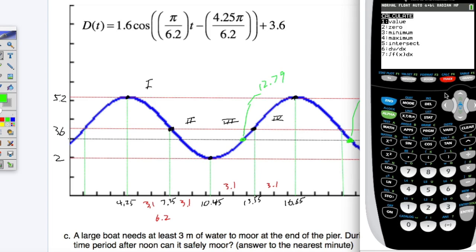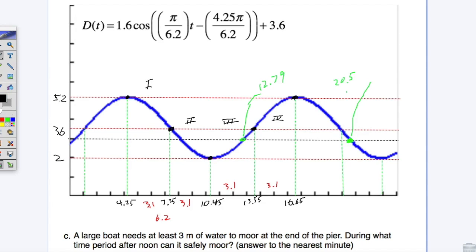And then let's do the same thing to calculate the intersection on the second side. So we'll just scroll over. Sometimes the computer acts weird here. You don't even have to be very close. And that gives you an intersection at 20.5. That's going to be 20 hours and 30 minutes. Let's quit out of this. We have 0.79 times 60. That's 47 minutes. So this is actually at 12:47, and this is at 20:30 or 8:30 PM.